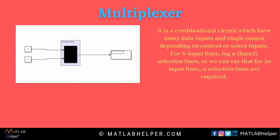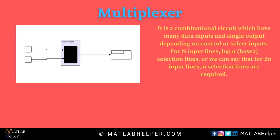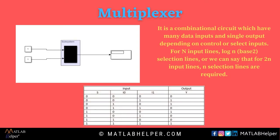A multiplexer is a device that has multiple inputs and a single line output. Due to this, a multiplexer allows the process of transmitting different types of data such as audio and video simultaneously using a single transmission line. The truth table for a two-to-one multiplexer is shown below.